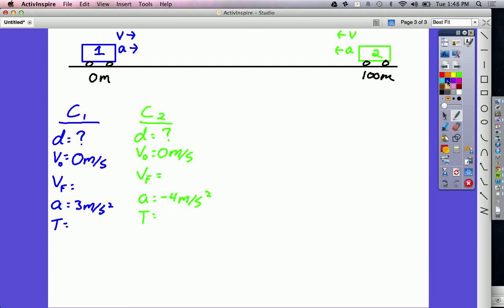So, the equations that we're going to use for car 1 is the displacement of car 1 equals its initial velocity times time, plus one-half acceleration of car 1 times time squared.